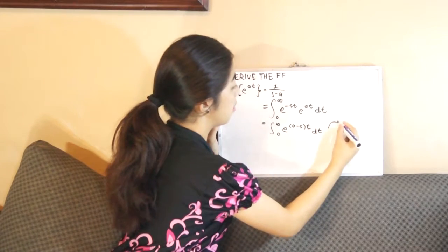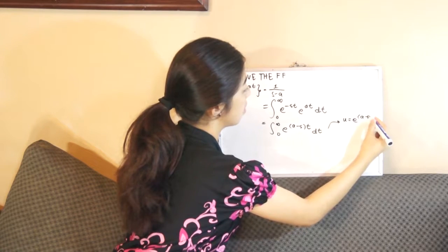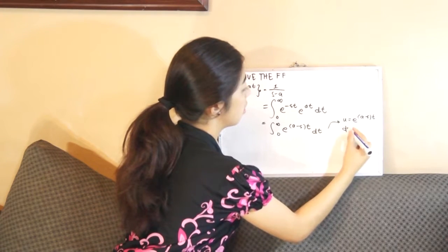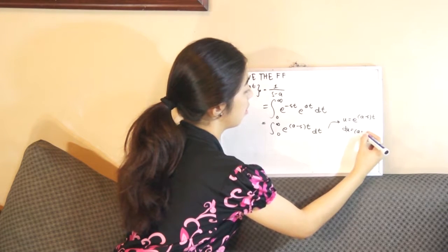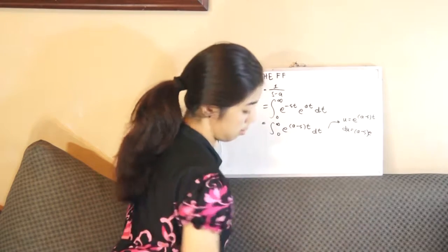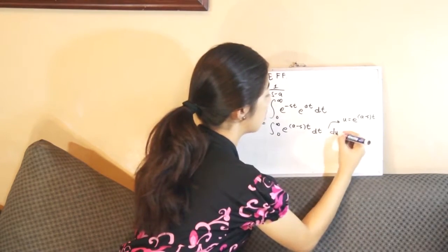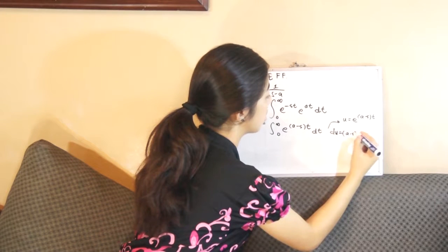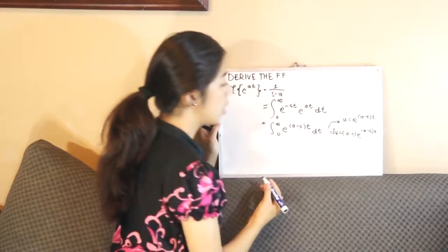We can now reduce the integration, which is u equals e raised to a minus s times t. And the integration of that is e raised to a minus s times t.